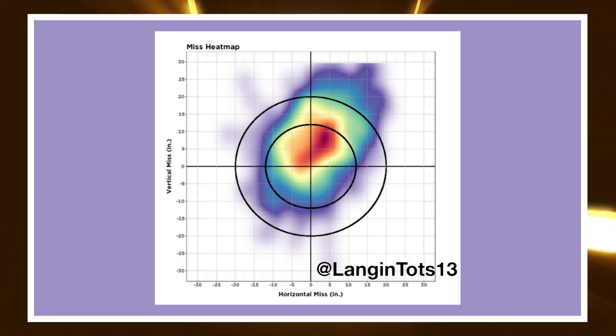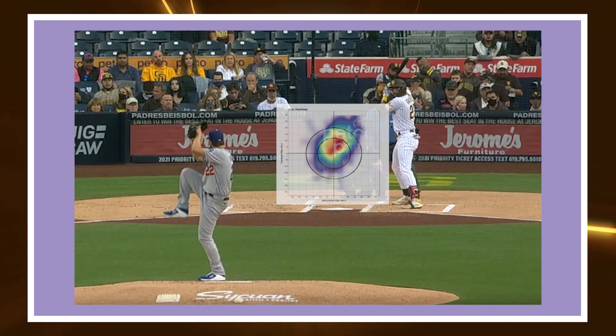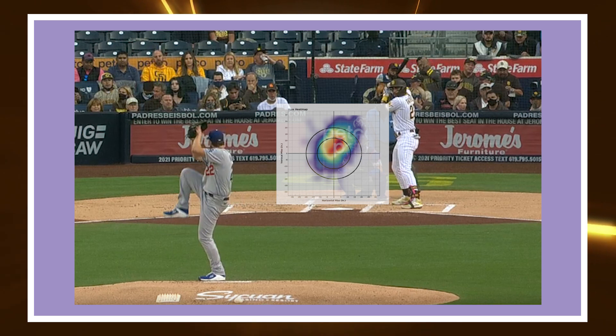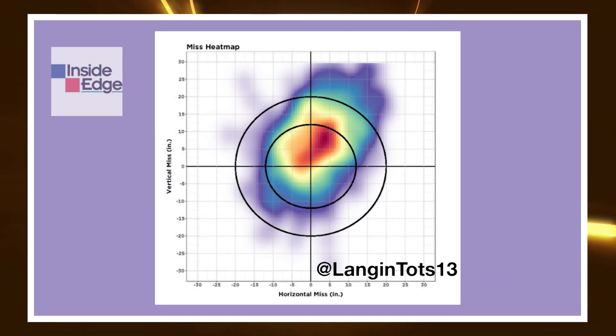One thing we have to accept is that even the best pitchers in the game miss their target most of the time. Baseball is a game of failure and command charts help us quantify that failure. This chart, posted on Twitter by Chris Langan of Driveline, is probably the most visually intuitive command chart that I've seen. This heat map is from the pitcher's perspective. The center of the plot is simply where the pitcher intended the pitch to land, wherever that was in the zone.